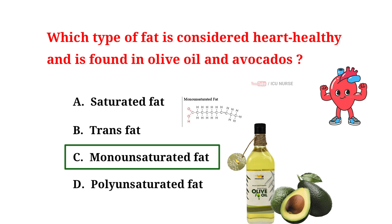Monounsaturated fats found in olive oil and avocados are considered heart healthy because they help reduce bad cholesterol levels in the blood — that is, they help lower LDL levels. Lowering LDL cholesterol can decrease the risk of heart disease and stroke. These fats also provide essential nutrients and antioxidants that protect the heart and blood vessels. Including monounsaturated fats in your diet can improve overall cardiovascular health.